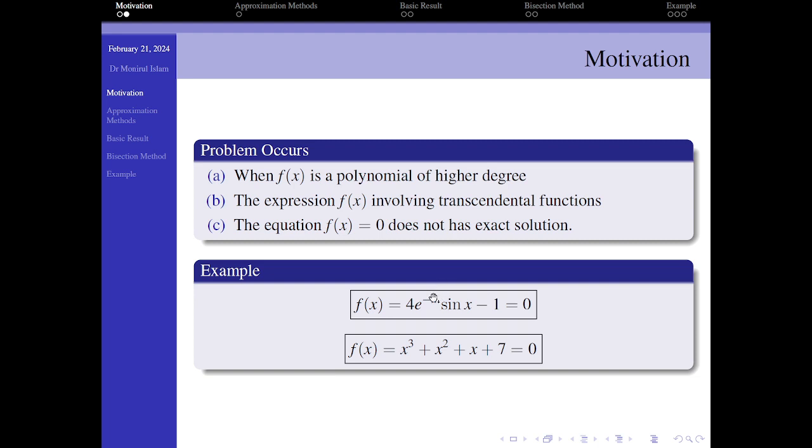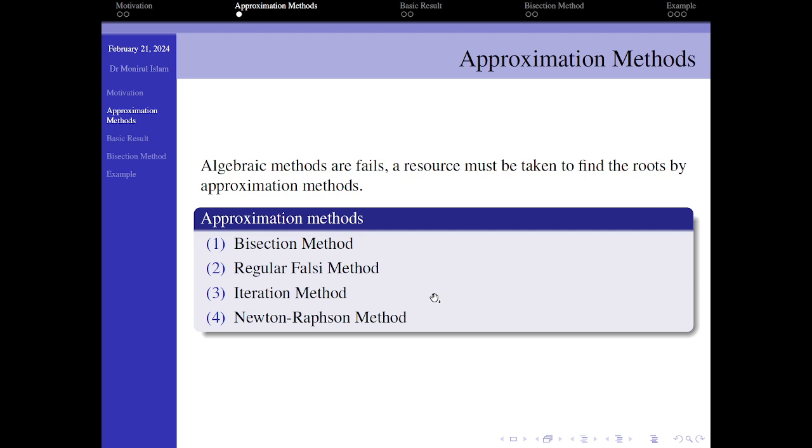So these are the basic approximate methods: first one is bisection method, second is regula falsi method, third one is iterative method, and Newton-Raphson method. In this talk, I consider only bisection method.